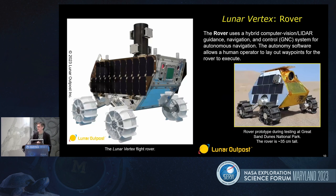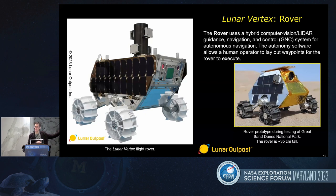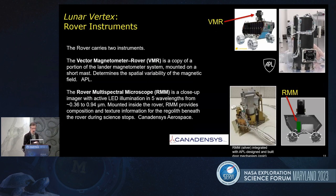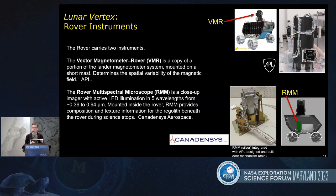We have a rover because it's of interest to make measurements at spatially distributed locations, especially outside the area of regolith disturbed by the lander's rocket exhaust. We bought a rover from a company in Colorado called Lunar Outpost. At APL, we integrated two instruments with the rover: another APL magnetometer suite, and a multispectral microscope mounted inside the rover body that uses active LED illumination in five wavelengths chosen for lunar science to give us information on soil composition and texture — important for understanding particle size and porosity, and for testing hypotheses for the origin of swirls.